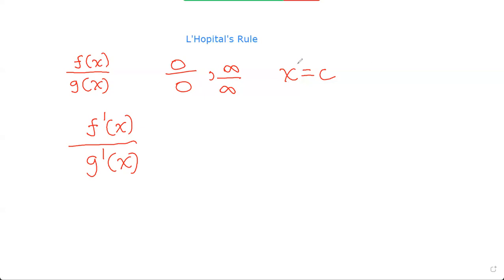But one important thing to know is if you get like 4 by 0 or something as your answer for f(x) by g(x), you cannot use this rule. It has to be 0 by 0, infinity by infinity, or any other indeterminate form.